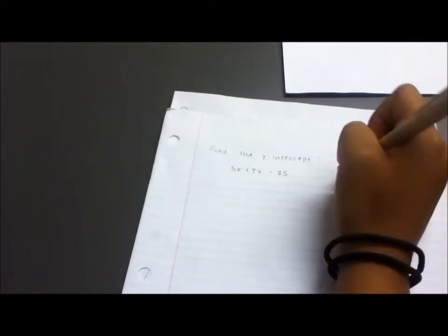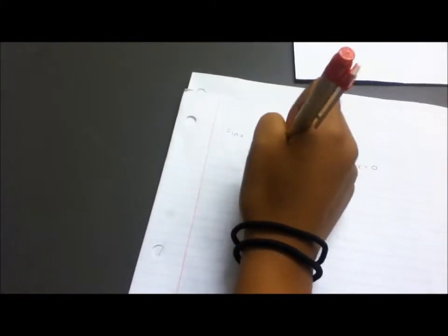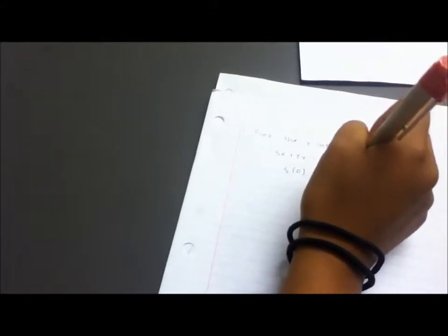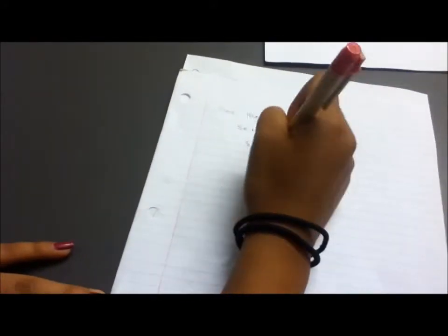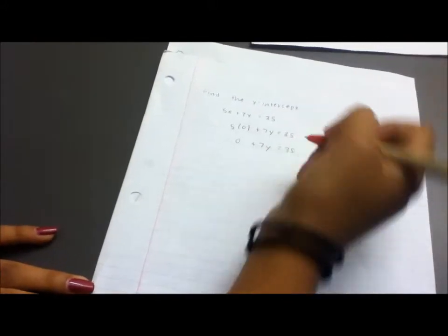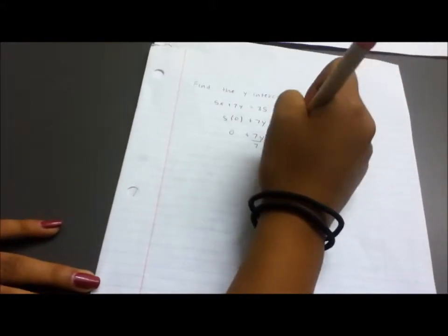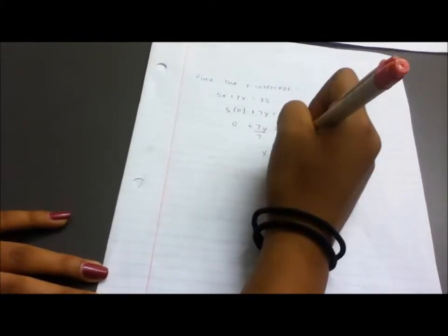So to find the y-intercept, you need to set x equal to 0 and plug it into the equation. After this, you just distribute the 5 to the 0, so it will be 0 plus 7y equals 35. To get y by itself, you divide 7 to both sides, and then you get y equals 5. That's your answer. Do you get it now?